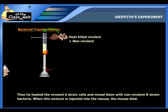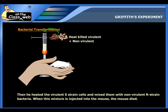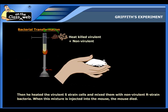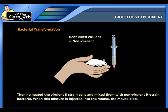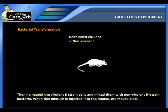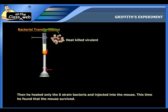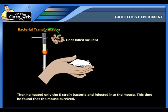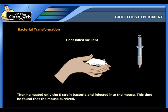Then, he heated the virulent S-strain cells and mixed them with non-virulent R-strain bacteria. When this mixture was injected into the mouse, he found that the mouse died. He further continued his experiment by heating only the S-strain bacteria and injecting it into the mouse. This time, he found that the mouse survived.